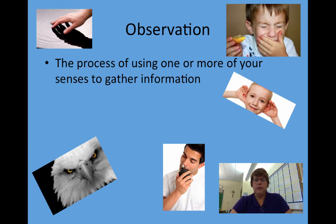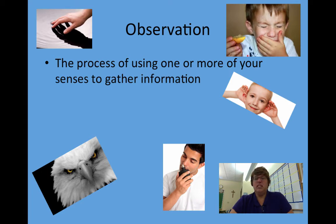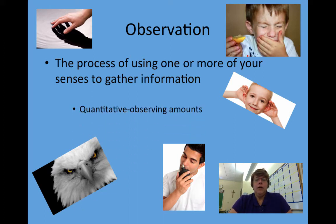These pictures show examples of how people or creatures use their senses to obtain information. The little boy tasted a lemon and you could see it was pretty sour. Another boy was listening for sounds. The man is smelling perfume to see what it smells like. The owl looks kind of mad — he's looking at the things around him, and the person is touching the water to see what will happen.